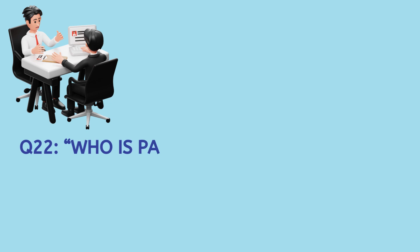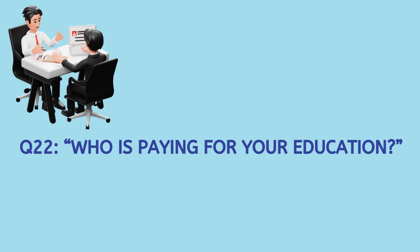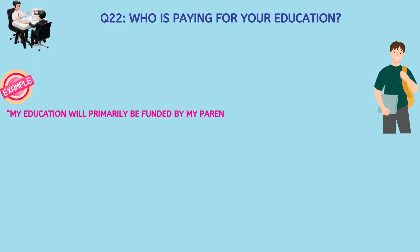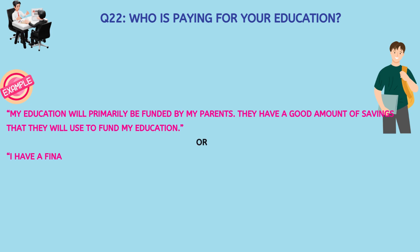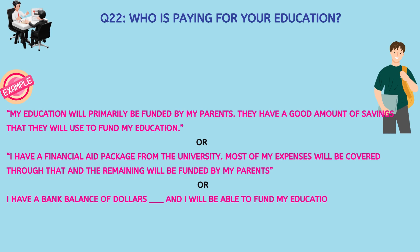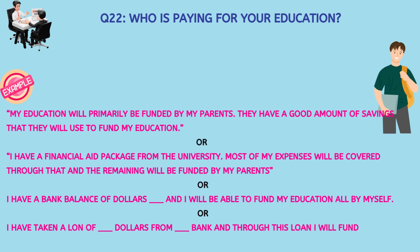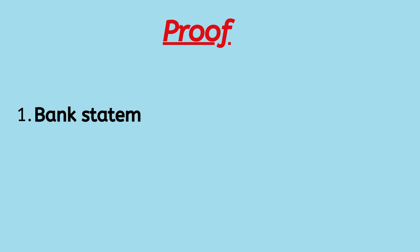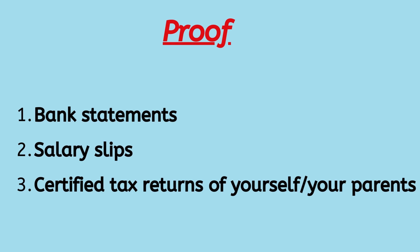Then comes a very important question: who is paying for your education? Now friends, if your parents are paying, you would say, 'My education will primarily be funded by my parents. They have a good amount of savings that they will use to fund my education.' Or if you have a scholarship, 'I have a financial aid package from the university; most of my expenses will be covered through that and the remaining will be funded by my parents.' Or 'I have a bank balance of these many dollars and I will be able to fund my education all by myself.' Or 'I have taken a loan of these many dollars from this bank.' To carry proof, you could carry bank statements, salary slips, and certified tax returns of yourself or your parents.